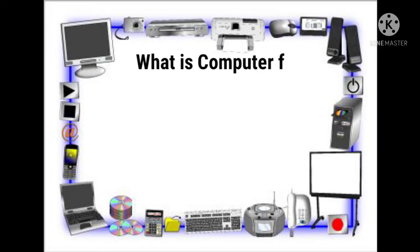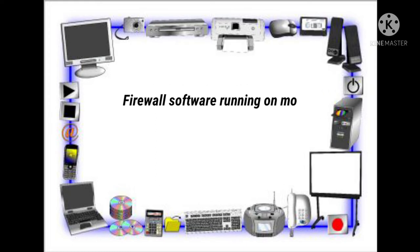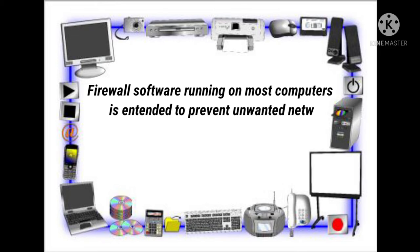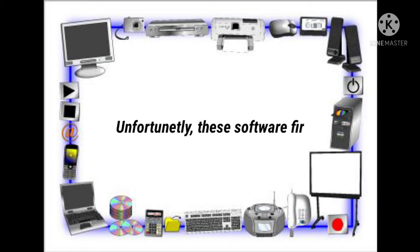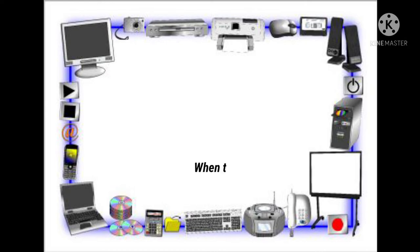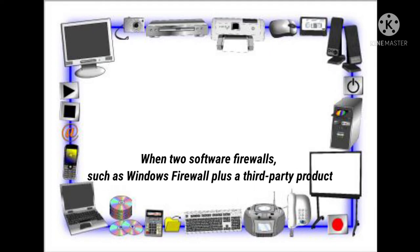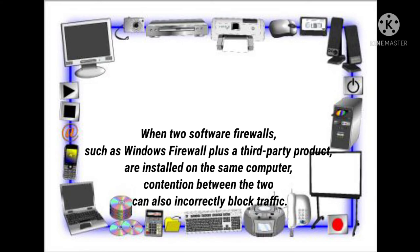What is a computer firewall malfunction? Firewall software running on most computers is intended to prevent unwanted network traffic from disrupting its operation. Unfortunately, these software firewalls can malfunction and start blocking valid internet traffic. When two software firewalls, such as Windows Firewall plus a third-party product, are installed on the same computer, contention between the two can also incorrectly block traffic.